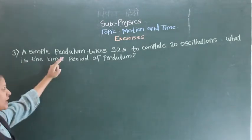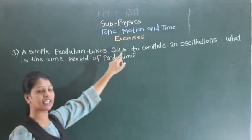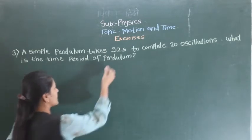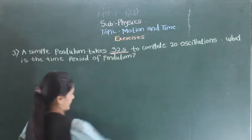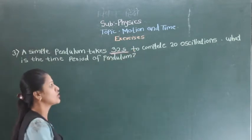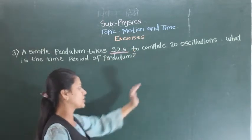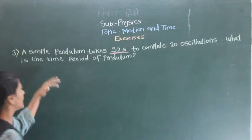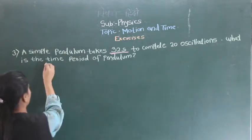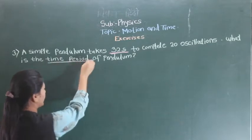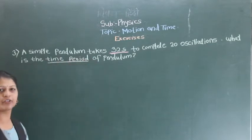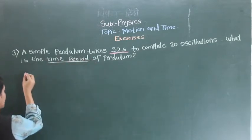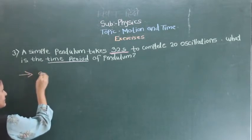A simple pendulum takes 32 seconds — how many seconds does it take? 32 seconds, to complete 20 oscillations. What is the time period? Now what do we have to find? You have to find the time period. Now see the solution for this.